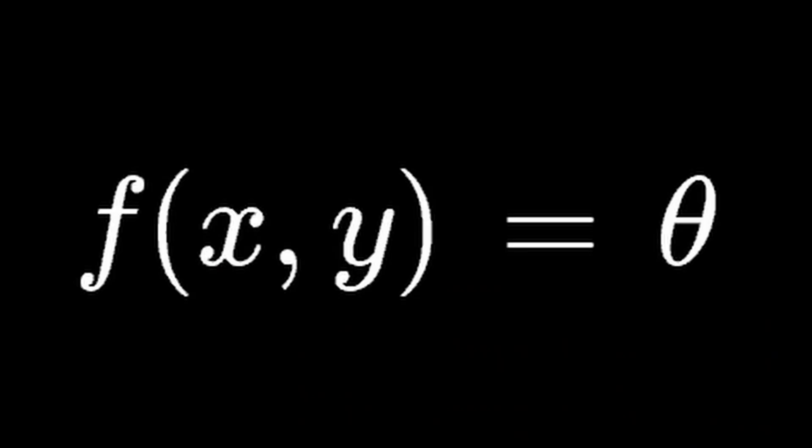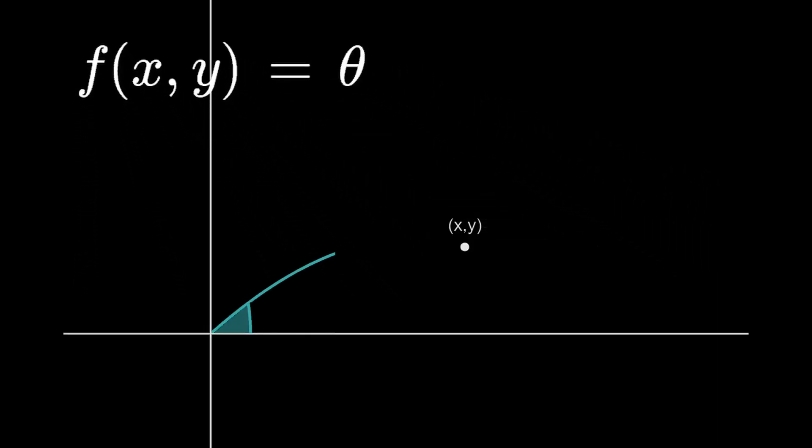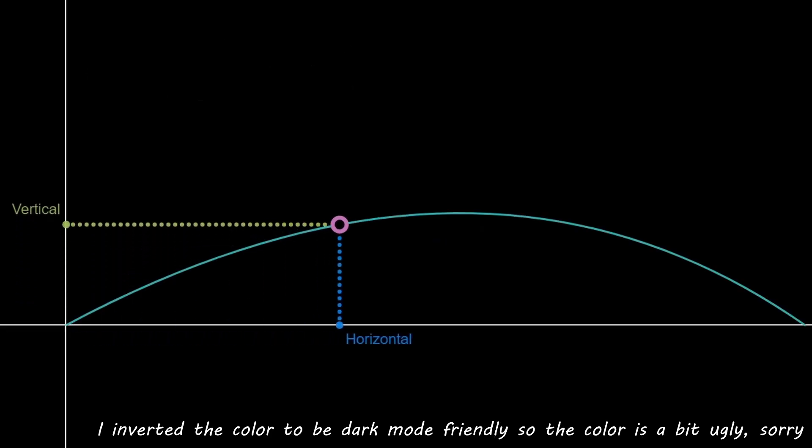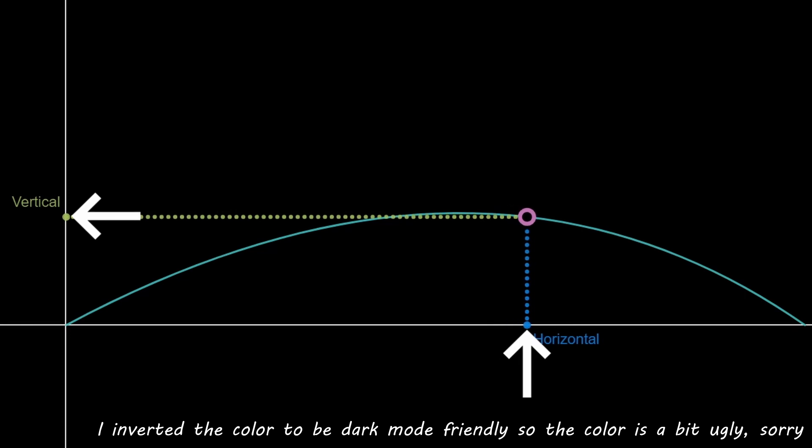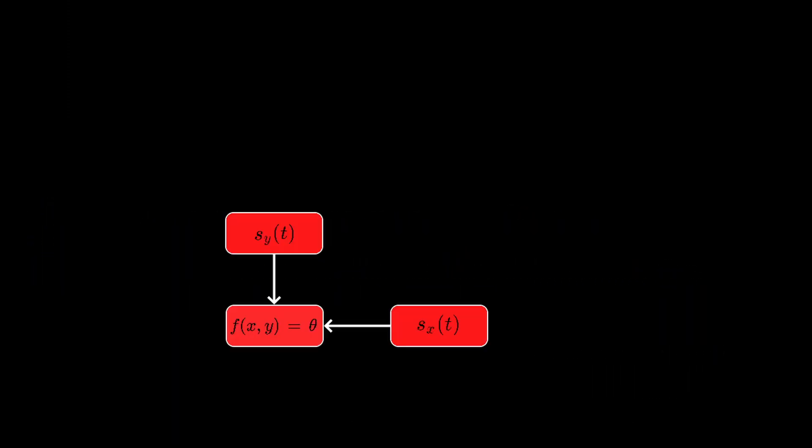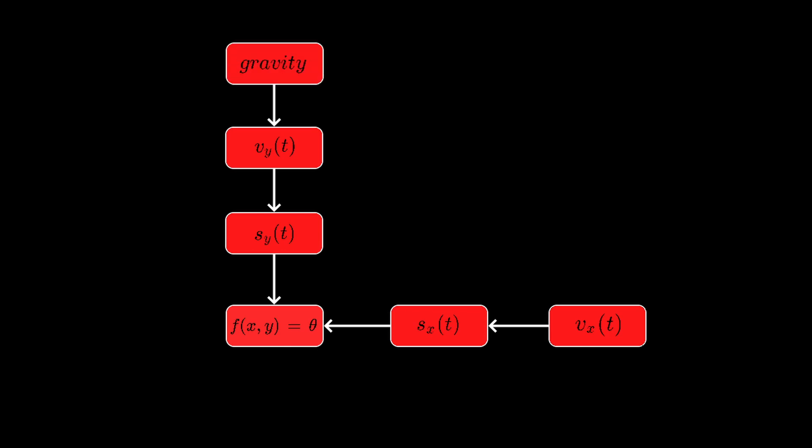Our final goal is to create a function or make a calculator which takes the target's distance and elevation as the input, and returns the angle of elevation we need to aim for in order to hit the target. To get there, we'll need two formulas: the displacement for the vertical axis and the horizontal axis, both as a function of time. And to get those two formulas, we'll need to know the velocity as a function of time for both axes. The vertical axis will be much more of a pain due to gravity. But regardless, in order to find both formulas, we will need to know the acceleration due to air resistance.